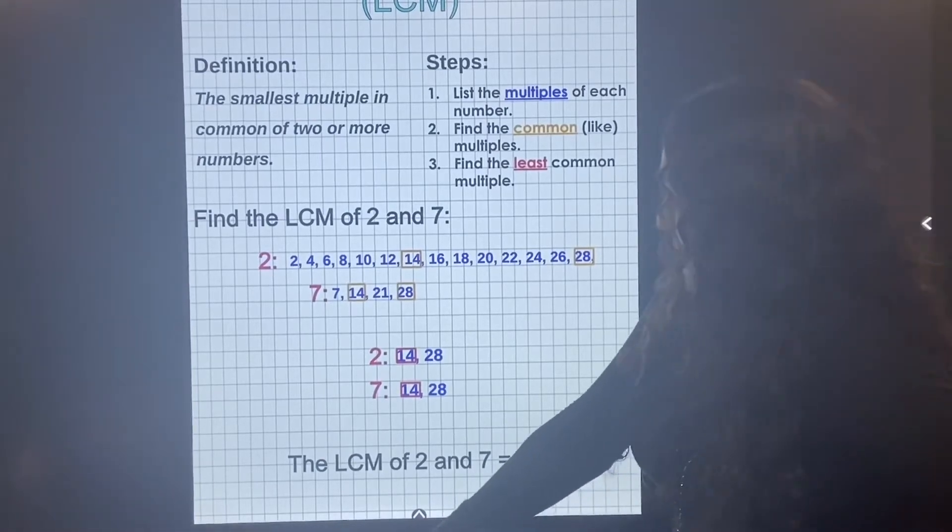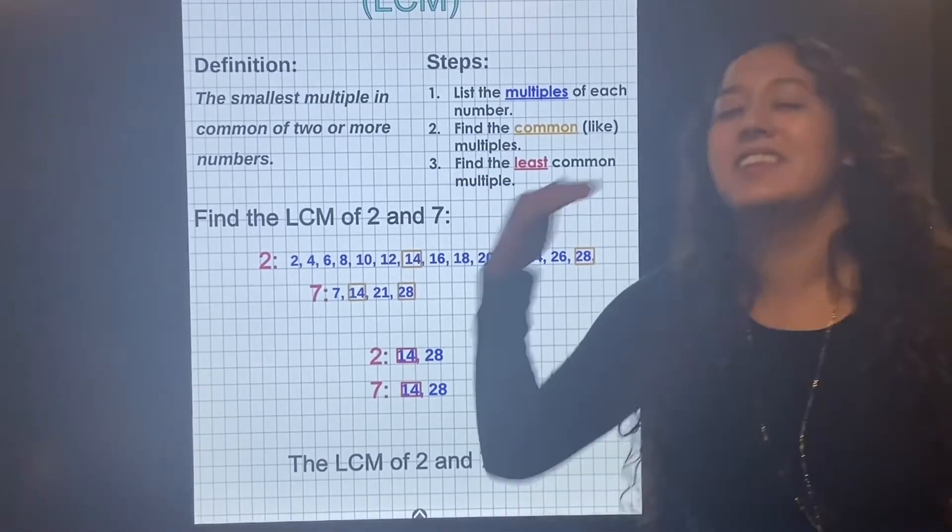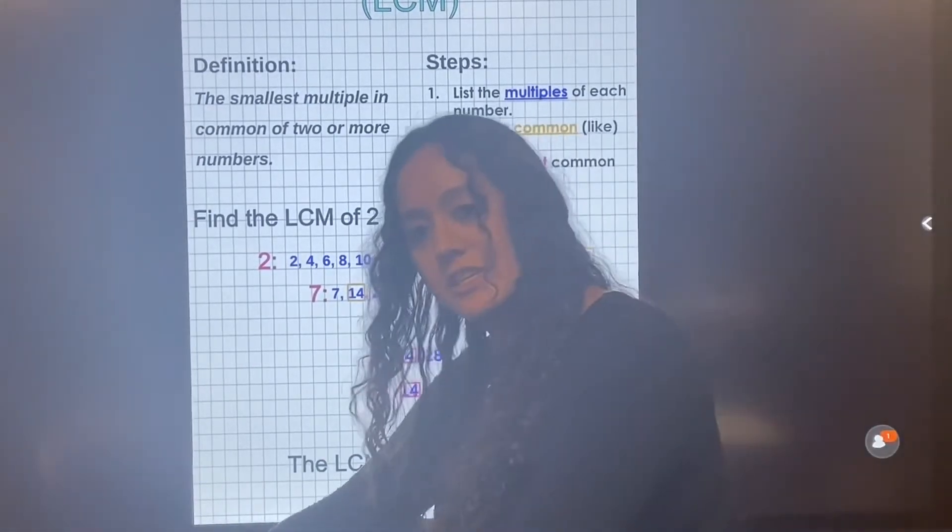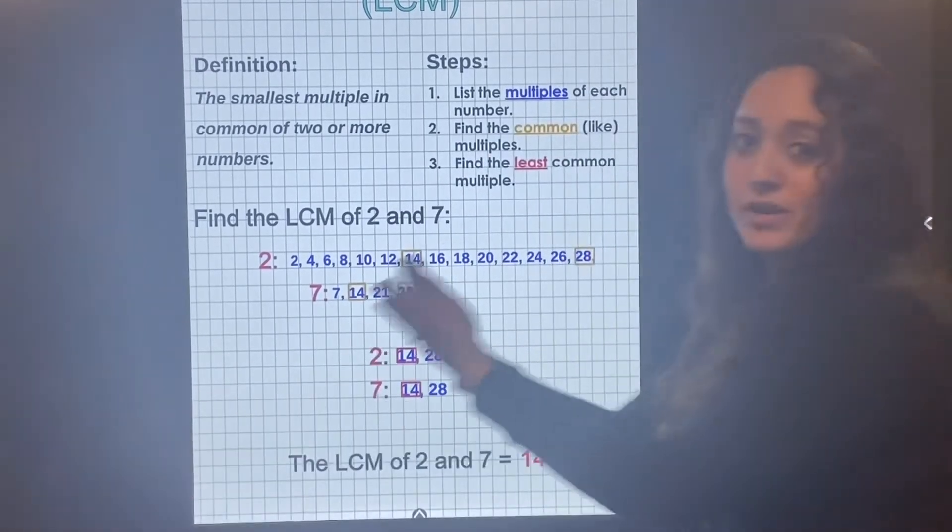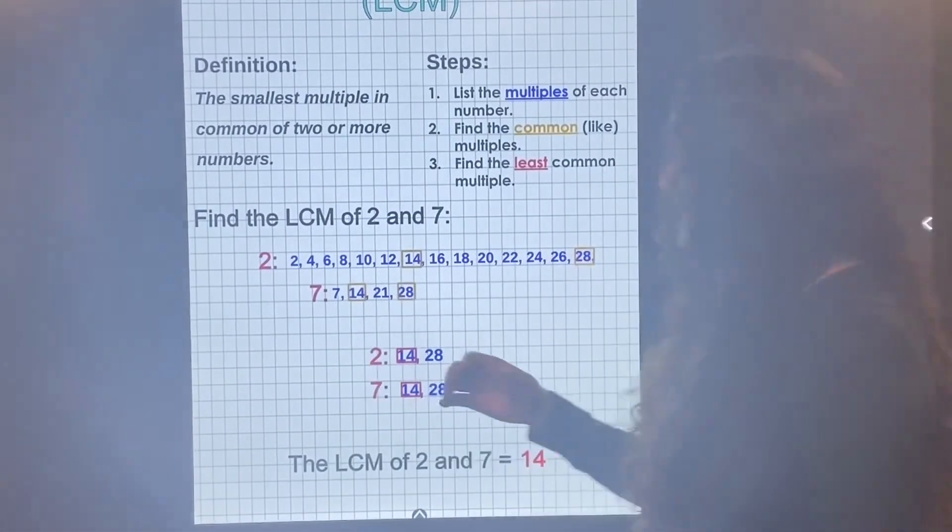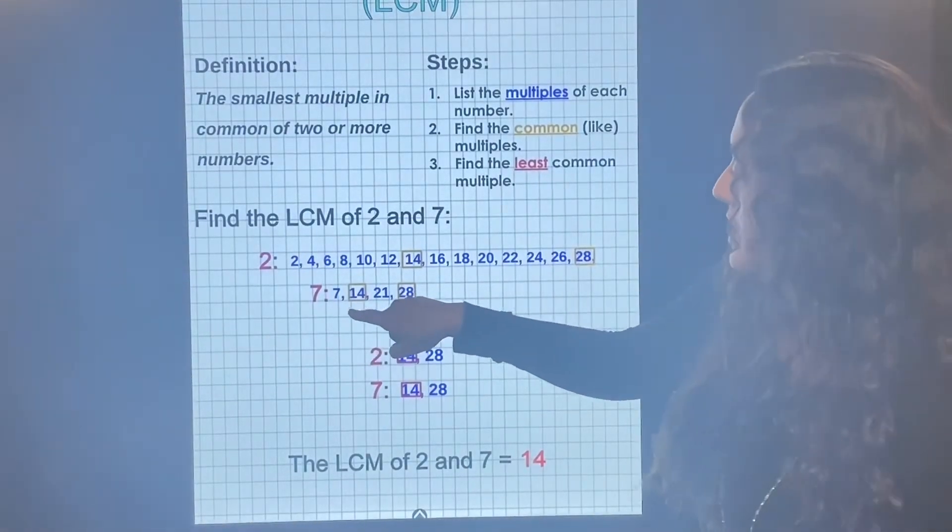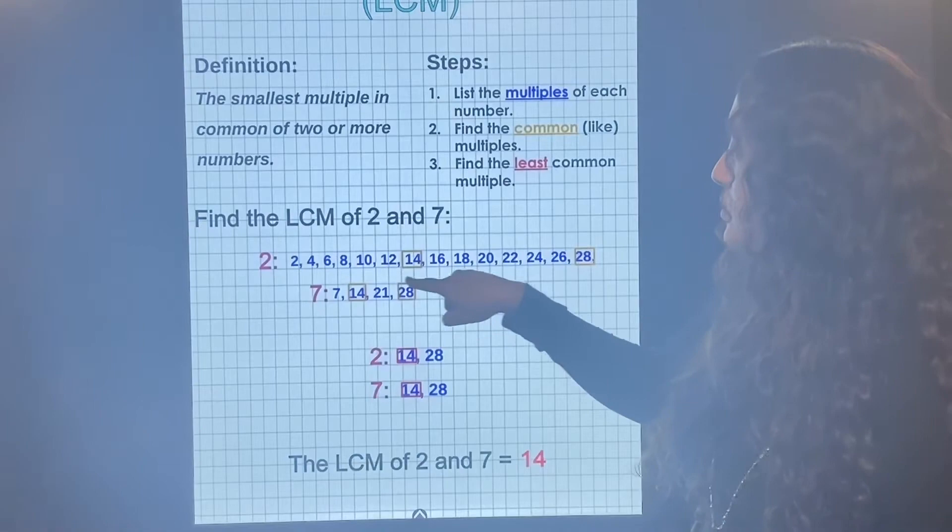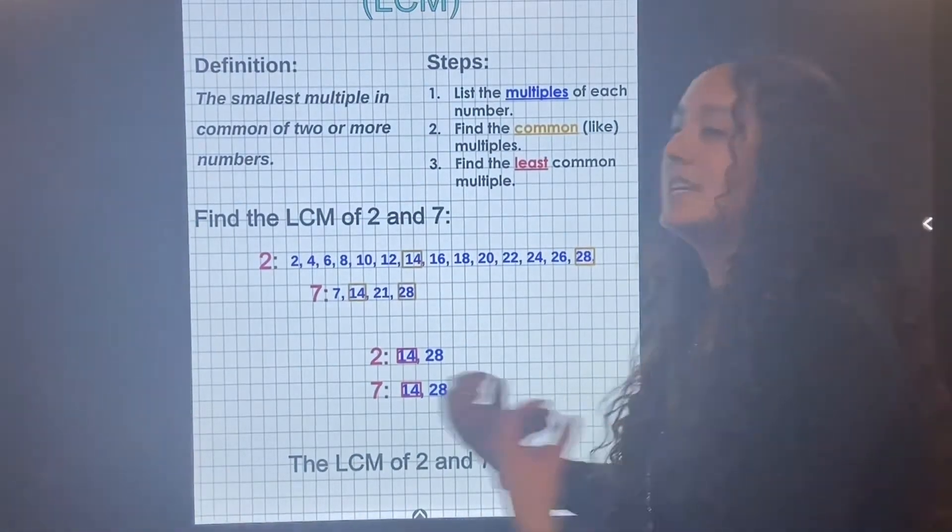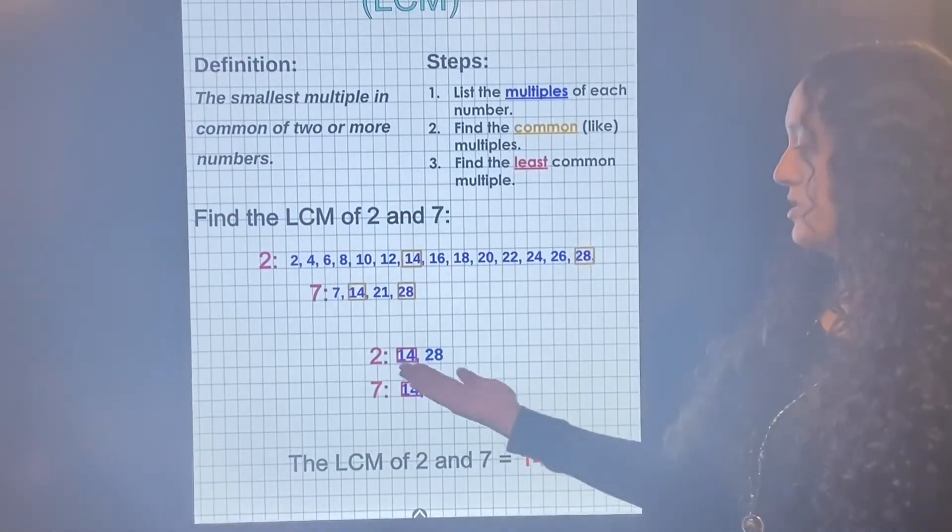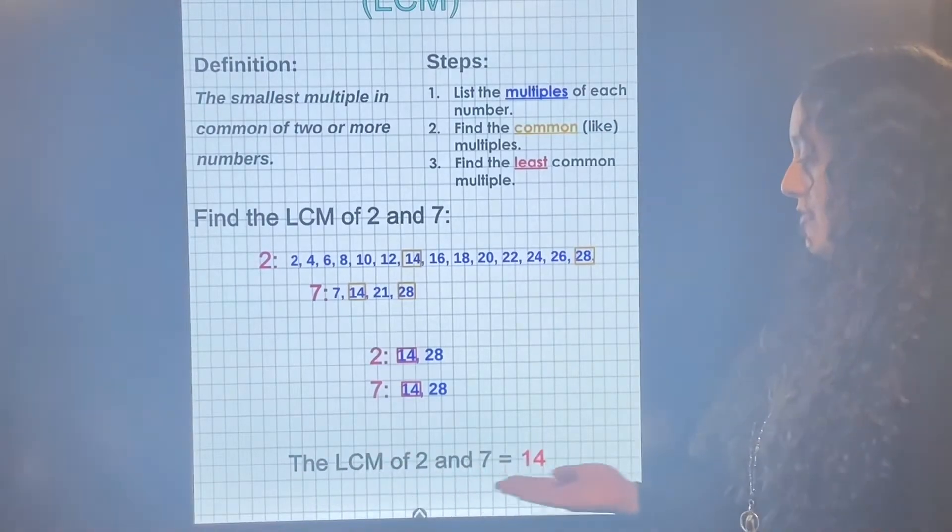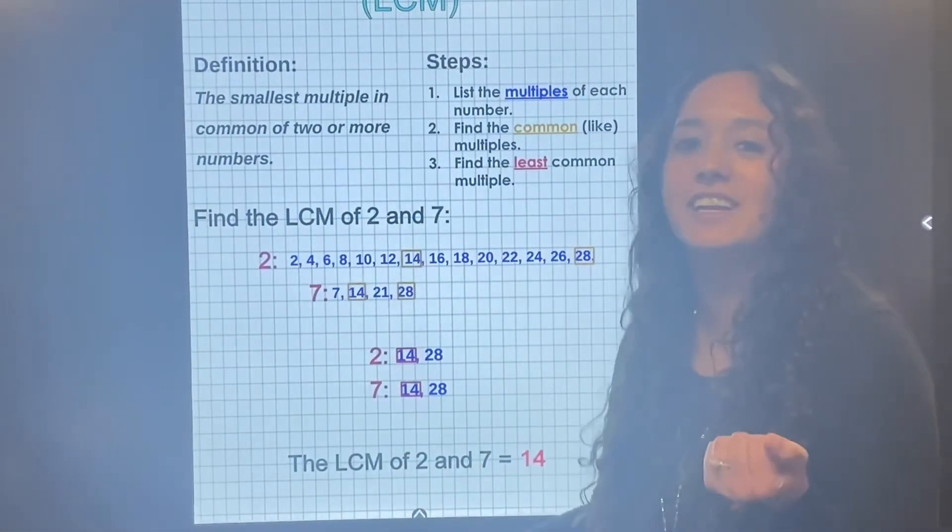So the least common multiple. When you think of least, think of the smallest. Not like greatest common factor when we thought of a bigger number. Think of the smallest. So when we look at the ones they have in common, we box them out like we did with greatest common factors. So they have 14 in common. They have 28 in common. But which one's the least one they have in common? 14. So the LCM of two and seven is 14.